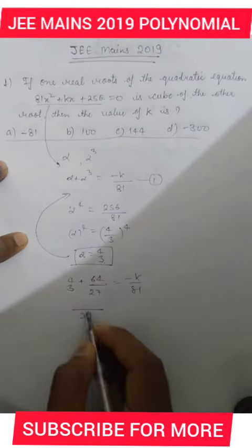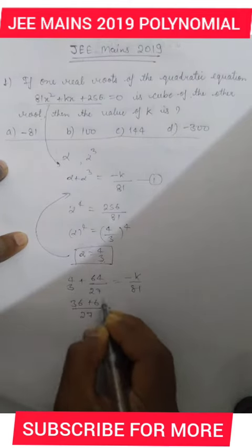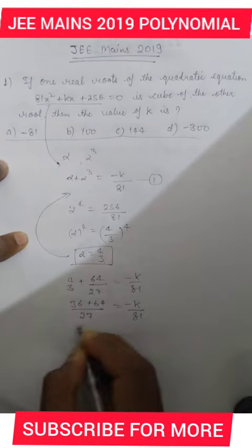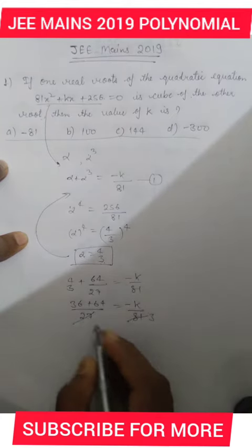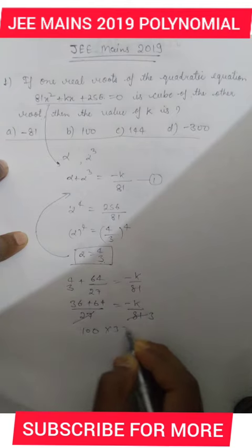This becomes 936 + 64 = -k/81. Then we divide by 27, which gives us 3. When we add this, we get 4063991, 10 × 3 = -k. So k value comes out to be -300.